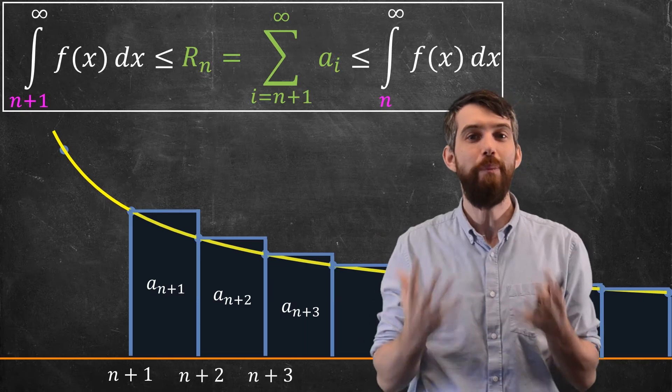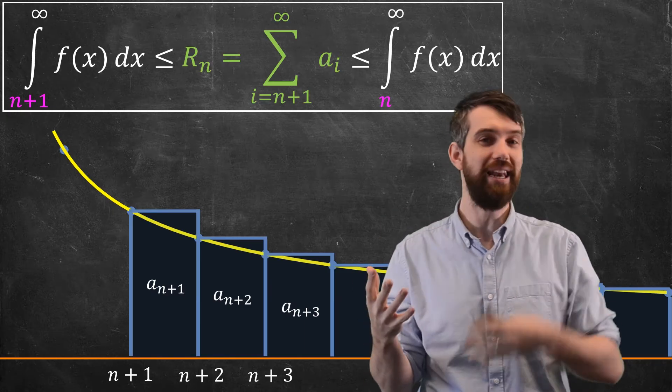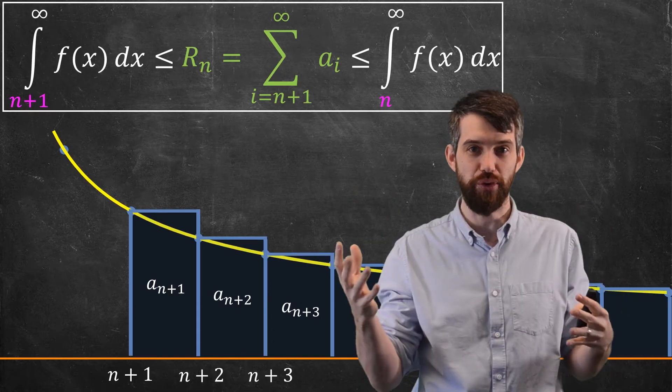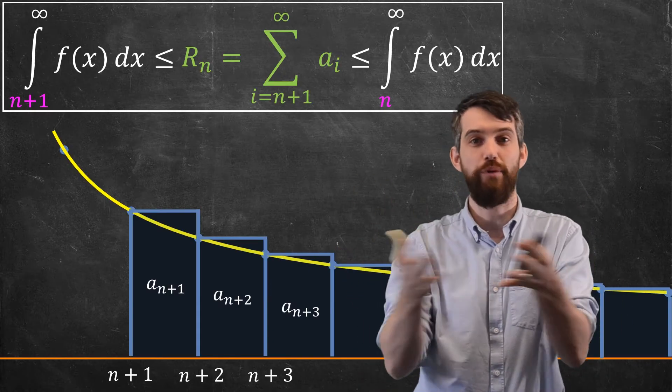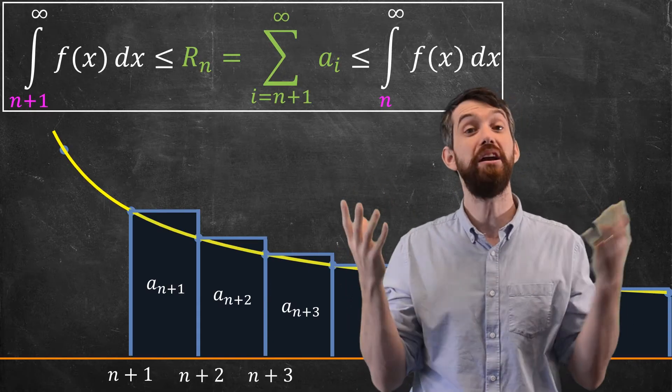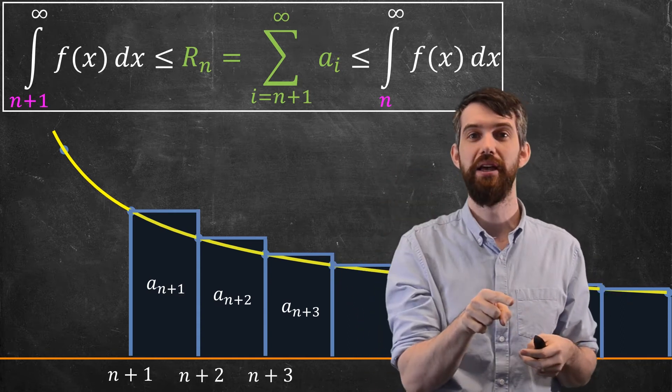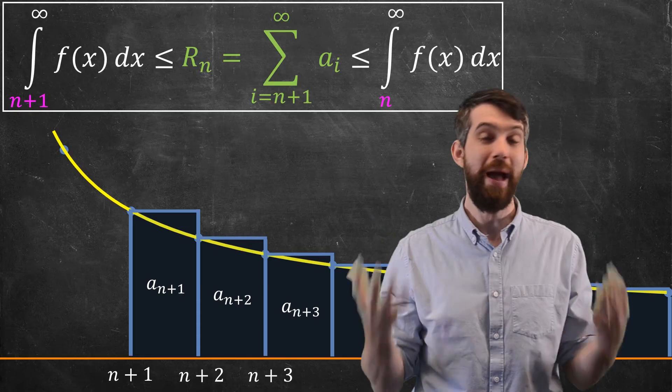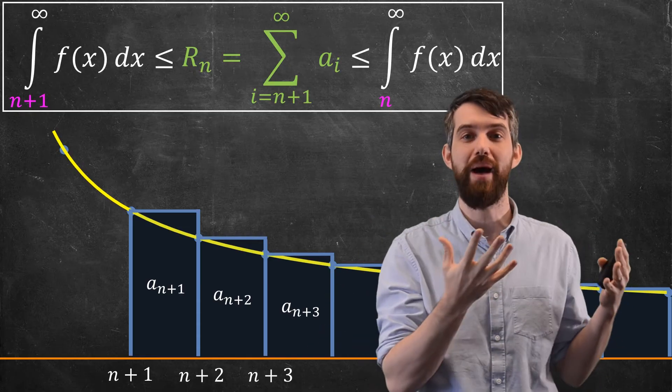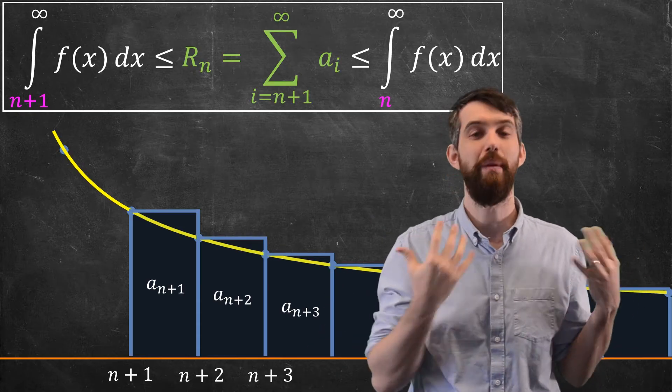So this is a bound. It tells me how bad could my remainder be. It has to be bigger than and less than these two different integrals. So if I want to estimate my remainder, I can compute these integrals, and that doesn't tell me what my remainder is exactly, but it gives me a reasonable bound to see whether my estimation is good enough for my particular application.